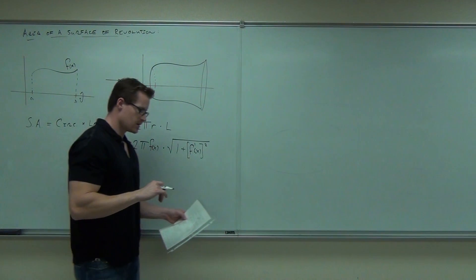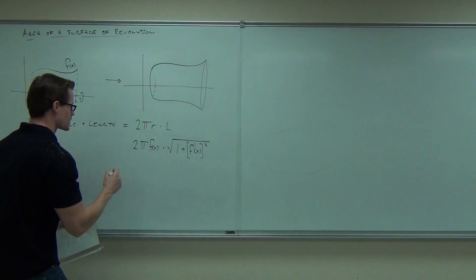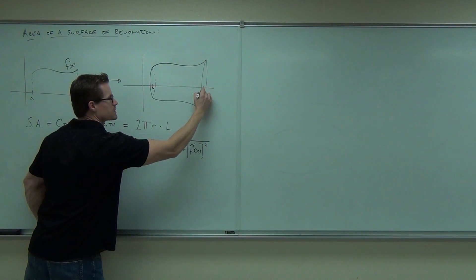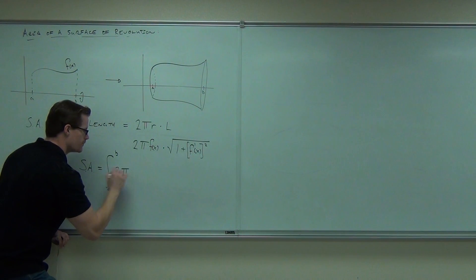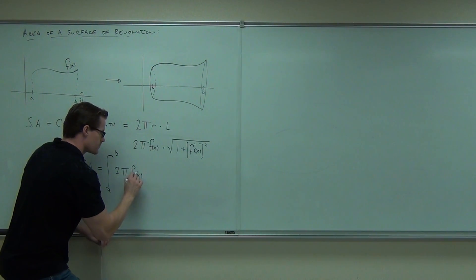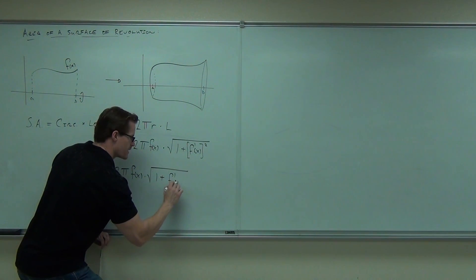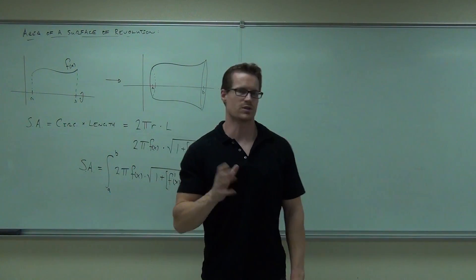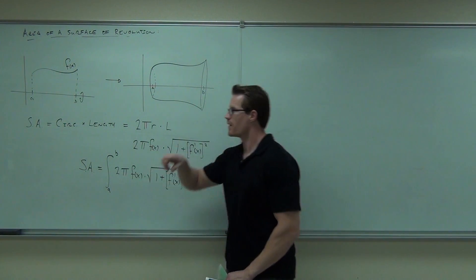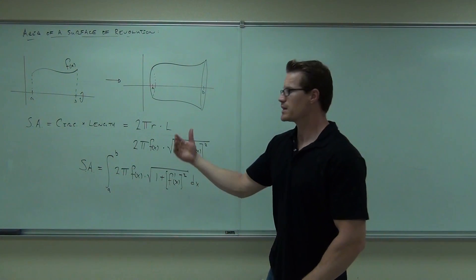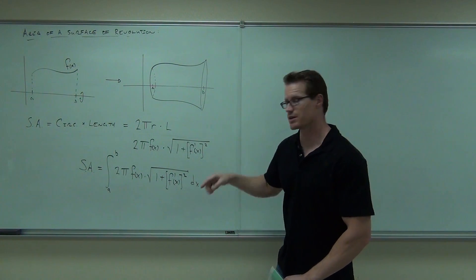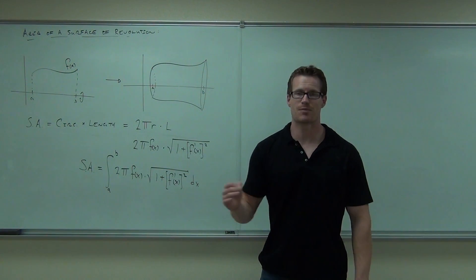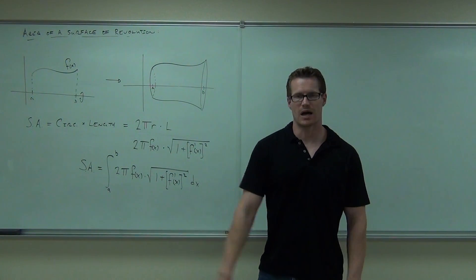So for us to find the surface area, we integrate at every single point. Surface area equals the integral from where we start to where we stop of 2π — that's the circumference — times f of x, times the square root of 1 plus f prime of x squared, dx. The formula comes from circumference — the distance around a circle — times the length, adding up all the little circles. That's how we find surface area.